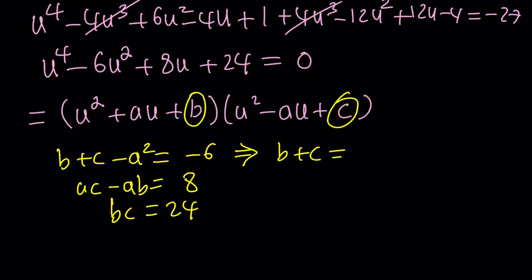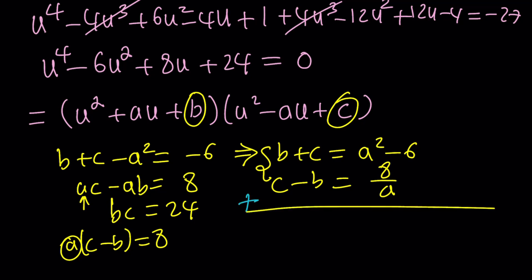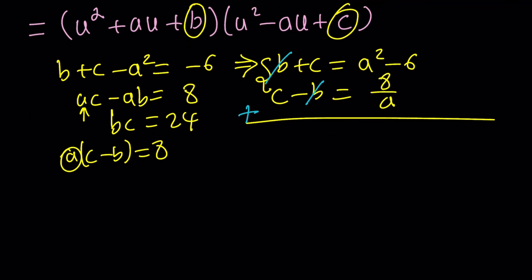Here's what you can do, and it's pretty standard with quartic equations after you get rid of the cubic term. You can write b plus c as a squared minus 6. Here you can factor out an a and divide both sides by a, so this becomes a times c minus b equals 8, and after division by a, you get c minus b equals 8 over a. Now you've got a good system, and if you add these two equations, the b is going to cancel out.